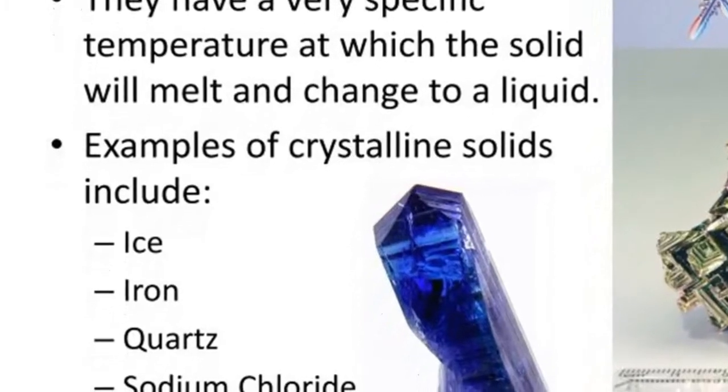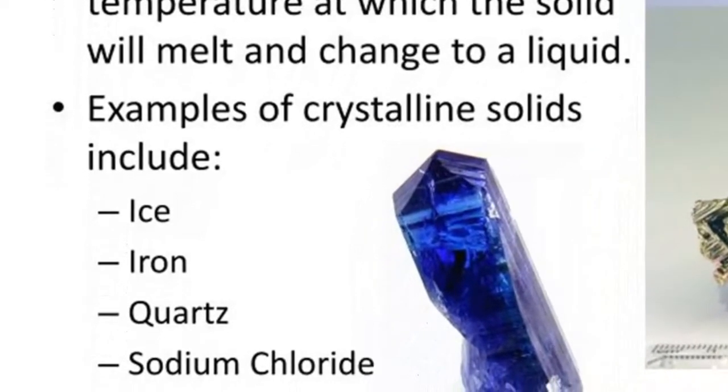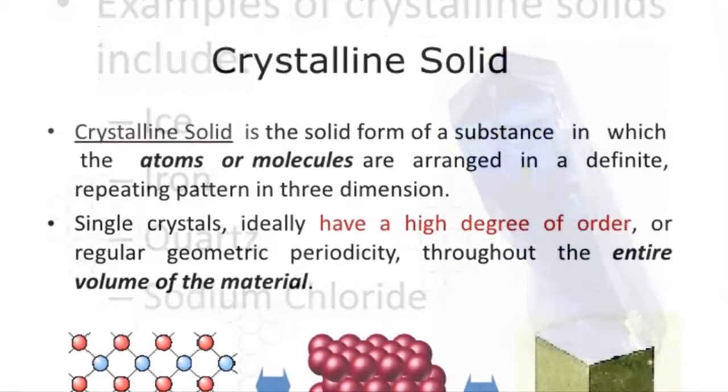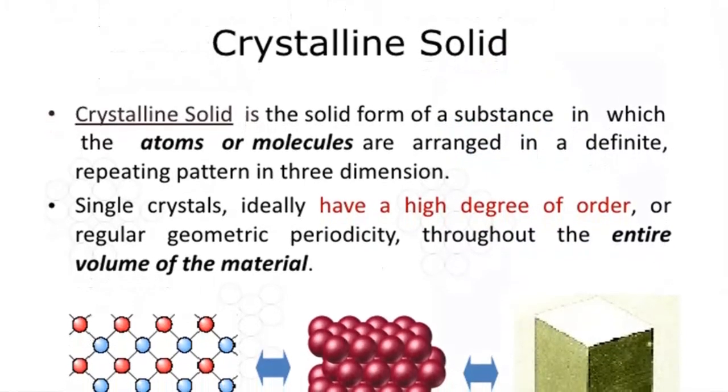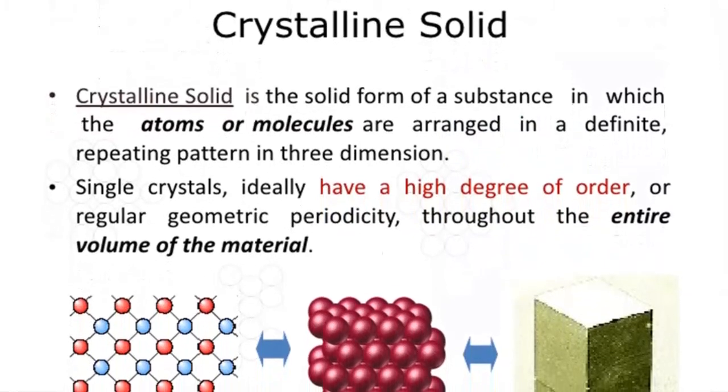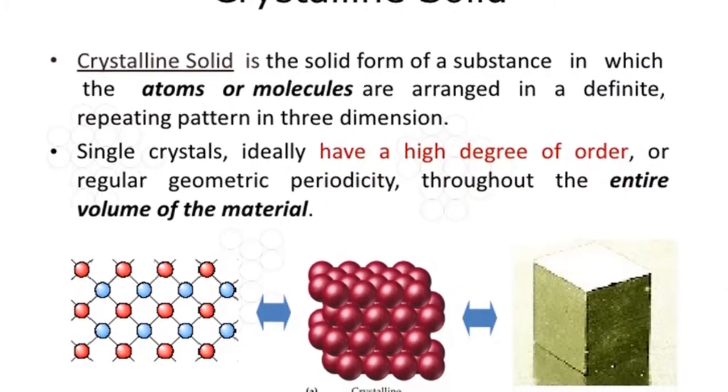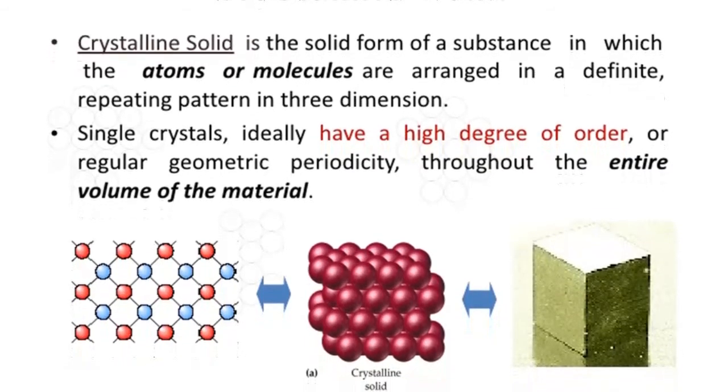Then, as magma cools, the ions begin to move more slowly and eventually join together into orderly crystalline structures. This process, called crystallization, generates various silicate minerals that reside within the remaining melt.